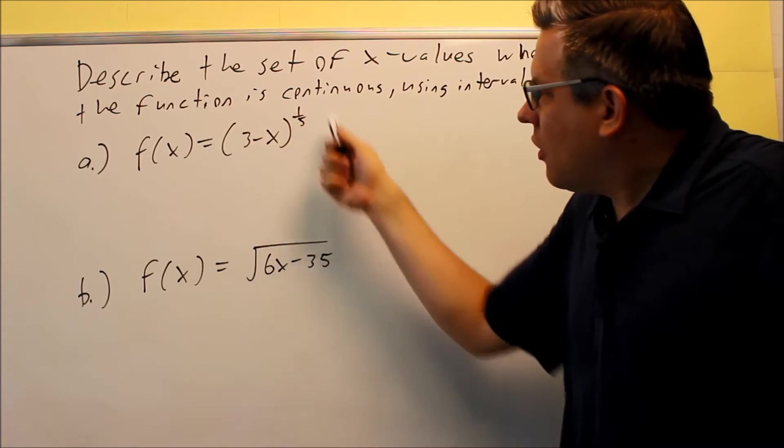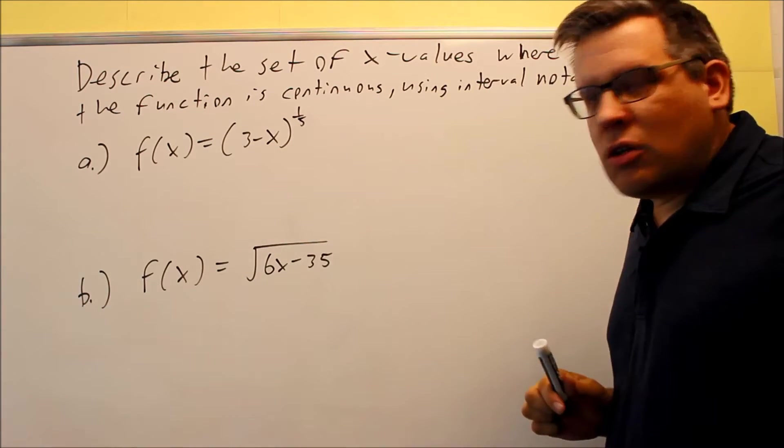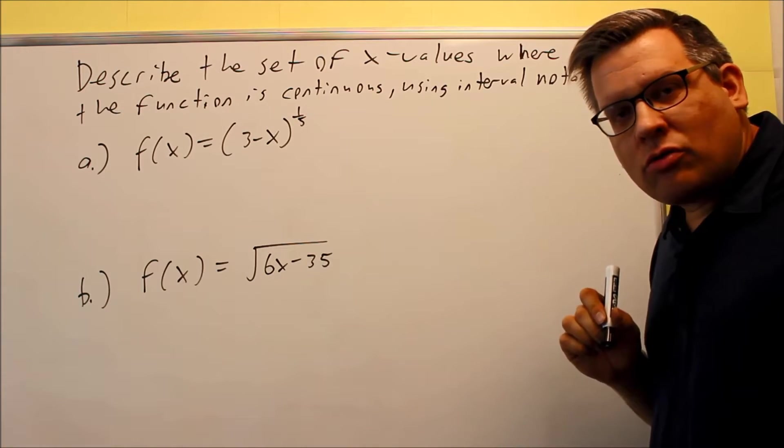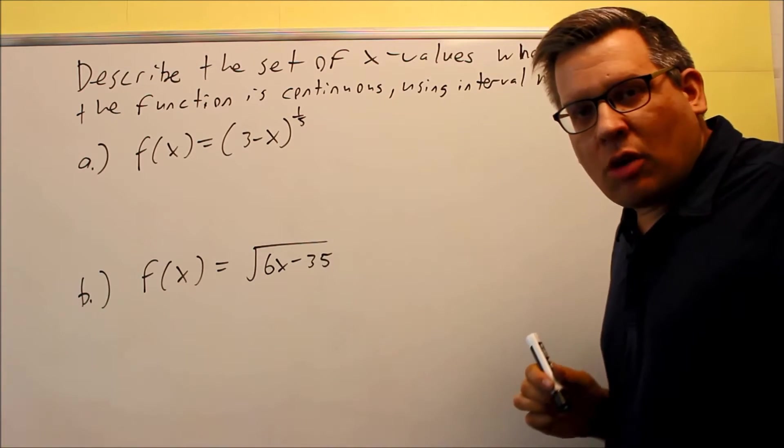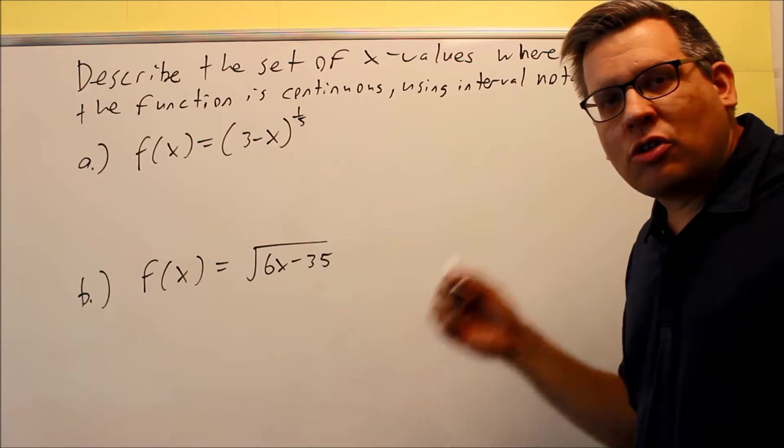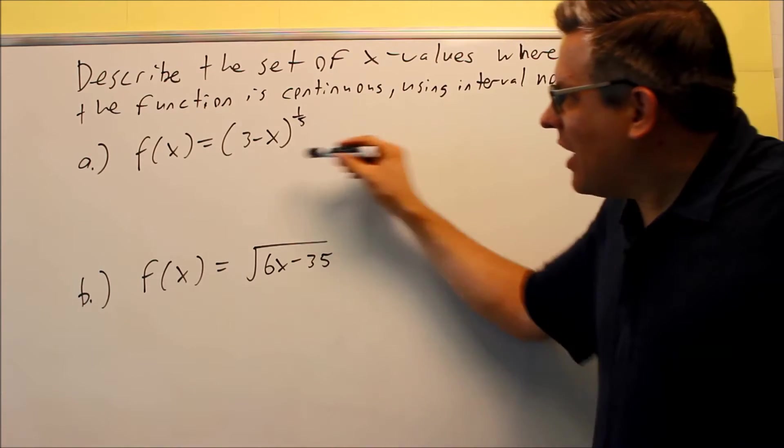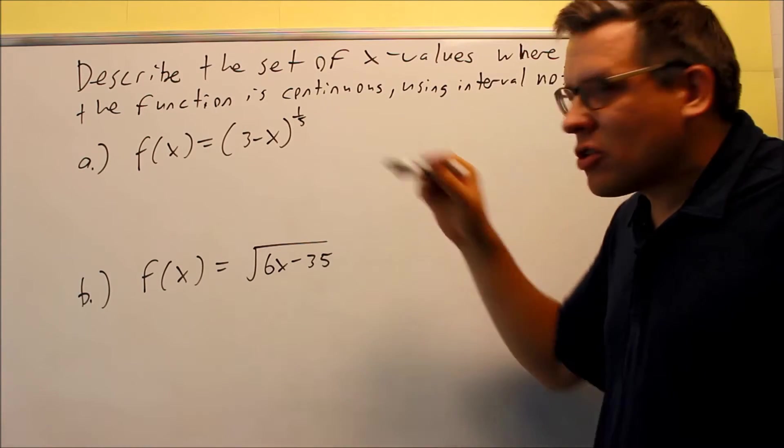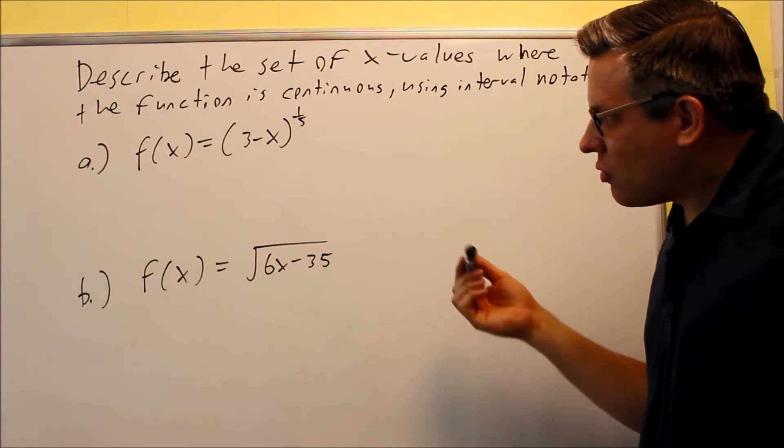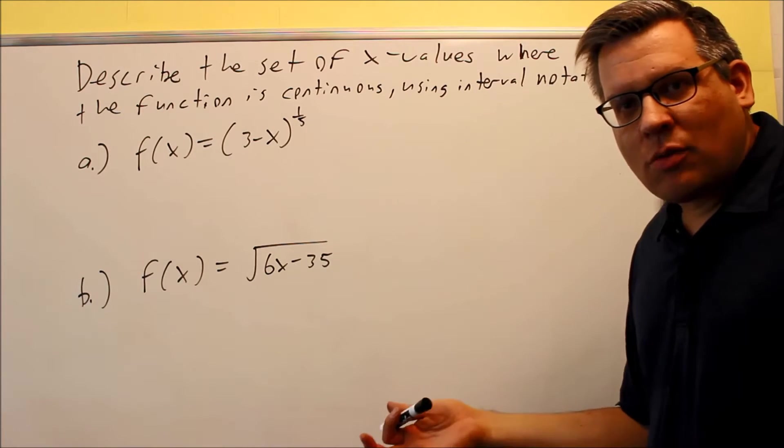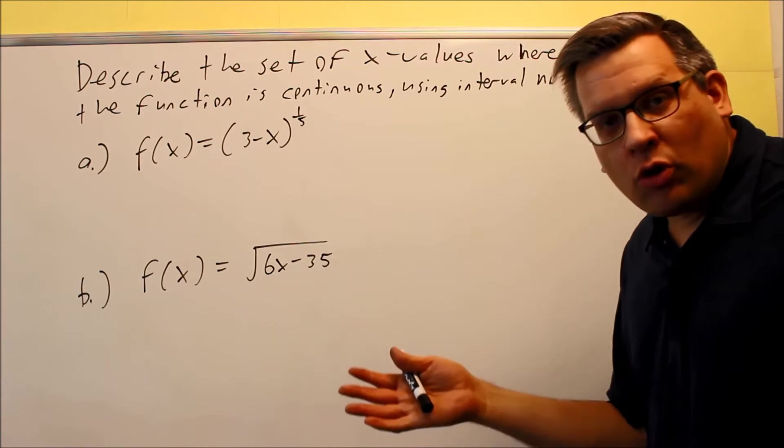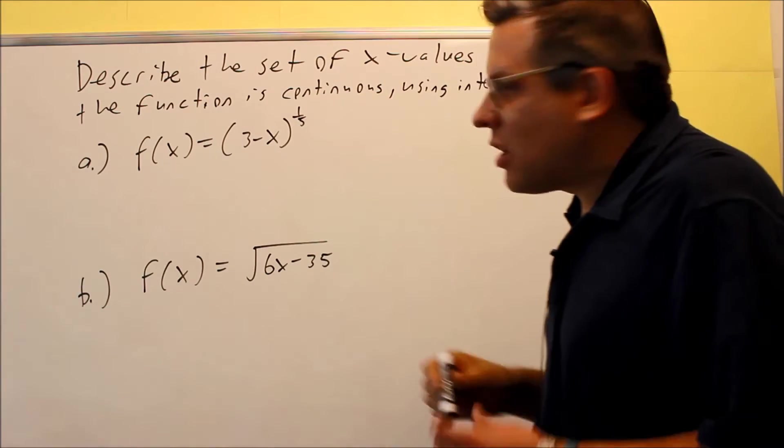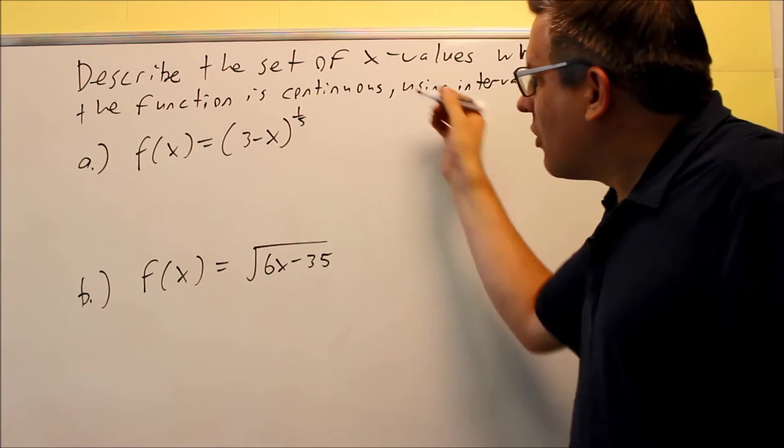For this, if we're considering what values that we can use here, that's a fifth root. Now if you have an odd root, you can use negative numbers, you can use positive numbers, you can use zero. So in this case any number that you have there would be okay to put in here. There's no restrictions with negatives, no restrictions with positives, we're not dividing by zero, we're not taking an even root of a negative number. So because of that, that means that this one is going to be continuous for every single number.